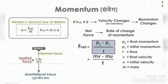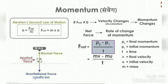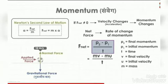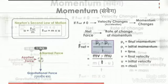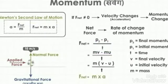This is P2 minus P1. How much time will it take? F net is mass into acceleration. This is the main thing.